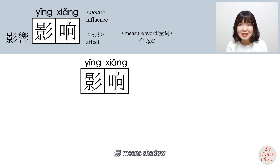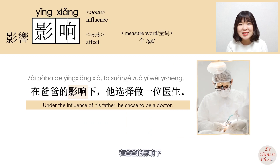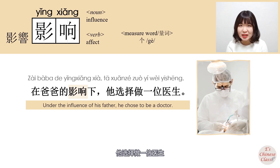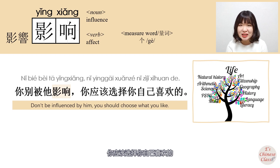影响: 影 means shadow, 响 means echo. So 影响 means influence. 在爸爸的影响下，她选择做一位医生。 你别被她影响，你应该选择你自己喜欢的。